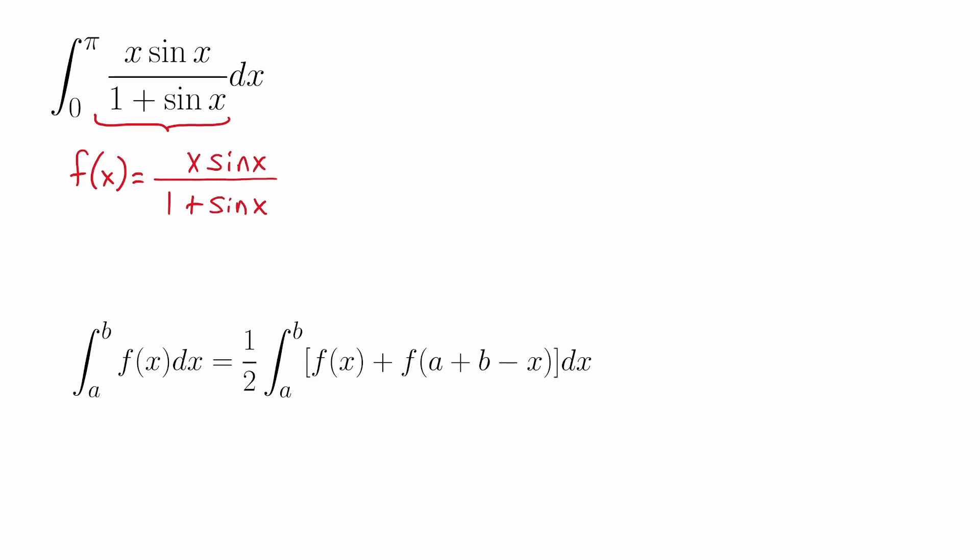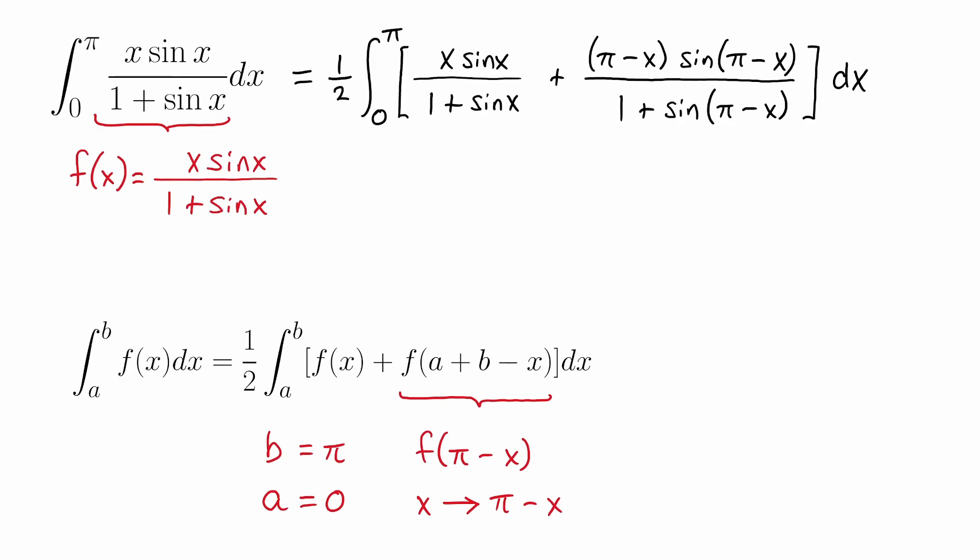Our first step in applying this peculiar property of definite integrals is to identify the function f of x, which will be x times sine of x divided by 1 plus sine of x — that's the function we're integrating. Next, we'll identify the values of a and b from our integral, which are 0 and pi. That will allow us to simplify that second term in our integral property as f of pi minus x. In applying this property, we're going to replace all x's for that term in our function with pi minus x, and we get to here, which should be straightforward.